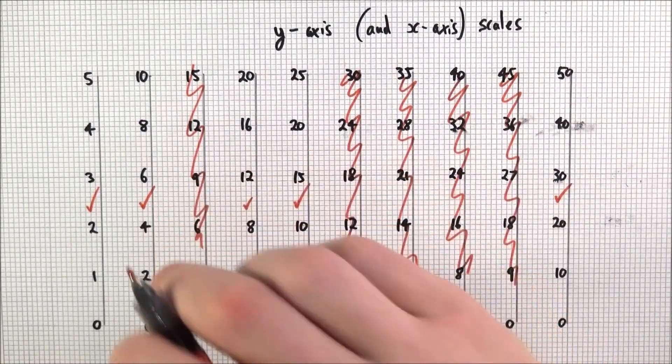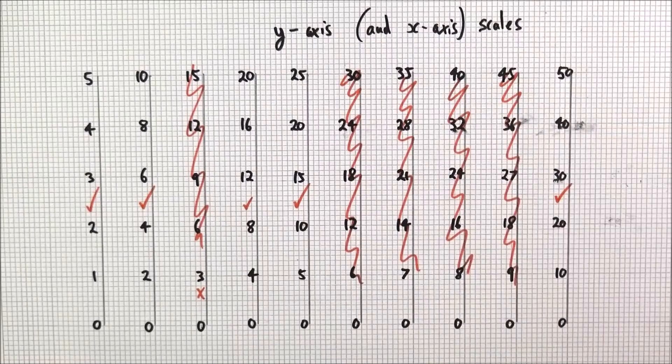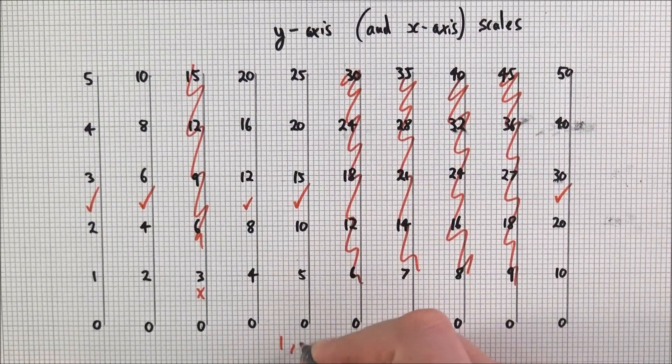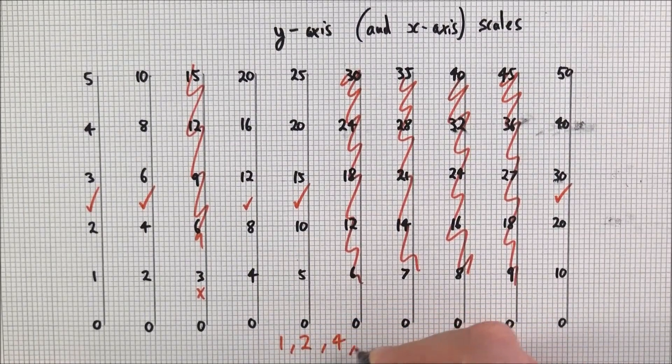So when it comes to marking your x and y-axis with your values, it's best to go up in 1's, 2's, 4's or 5's.